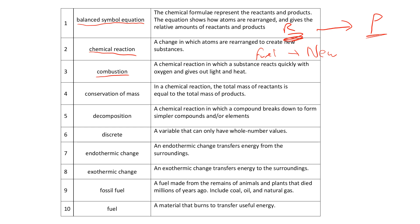In a chemical reaction, the total mass of reactants is equal to the mass of the products. So reactants to products — the mass of the reactants must be equal to the mass of the products. That is called conservation of mass. A chemical reaction in which a compound breaks down to form simpler compounds is decomposition — so breaking down is decomposition.